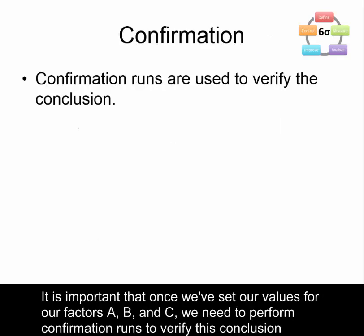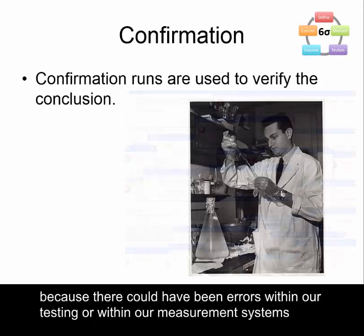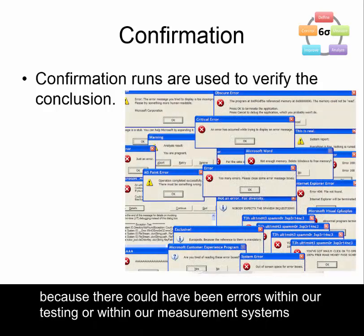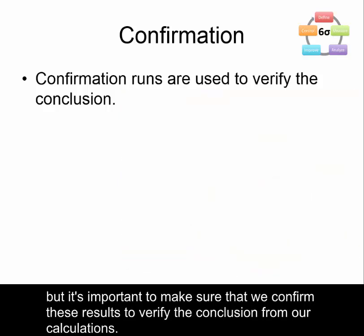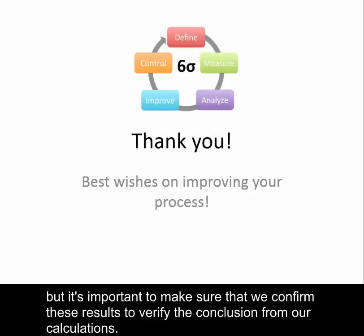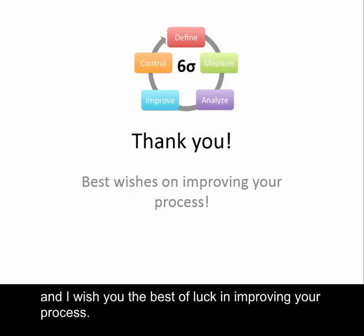Once we've set our values for factors A, B, and C, we need to perform confirmation runs to verify this conclusion, because there could have been errors within our testing or measurement systems. It's important to confirm these results to verify the conclusion from our calculations. I hope you found this video useful on calculating the y-hat and s-hat model in your design of experiments efforts, and I wish you the best of luck in improving your process.